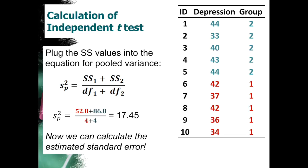So plug your sum of squares formula into the pooled variance equation. So again, we have sum of squares to the first group at 52.8 plus the sum of squares to the second group, 86.8. And we're going to divide that by 4 plus 4. Because again, we have 5 people in each group, n minus 1 plus n minus 1. So we have pooled variance of 17.45.